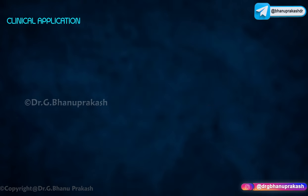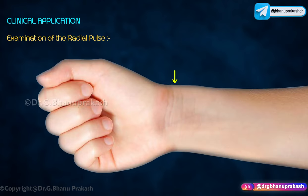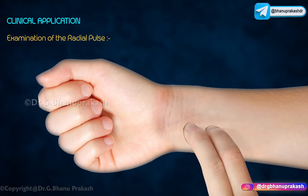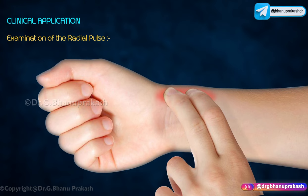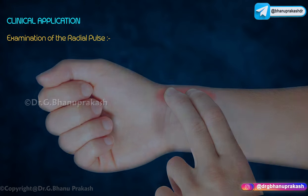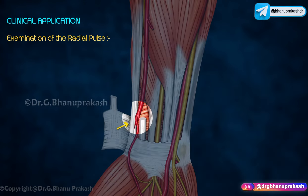Clinical correlation. Examination of the radial pulse. The arterial pulse is usually felt on the radial side of the wrist. Gentle pressure may be needed to feel the pulsations of the artery. The radial artery lies subcutaneously at the wrist, hence can be palpated easily.